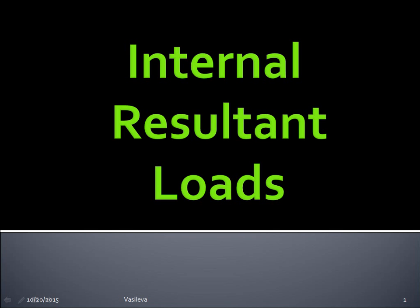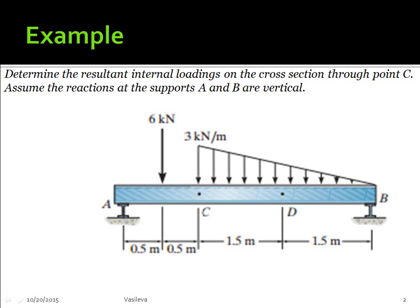Let's look at one example of how to find internal resultant loads. This is a case where we have a beam. Determine the resultant internal loadings on the cross section through point C.